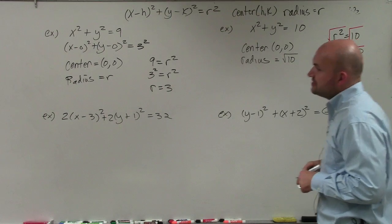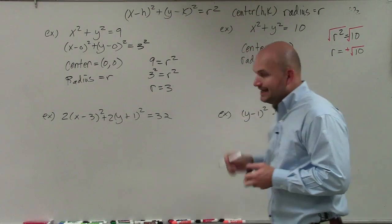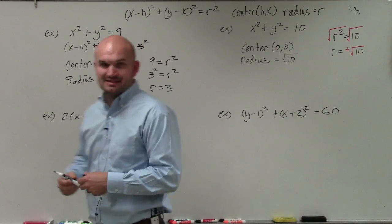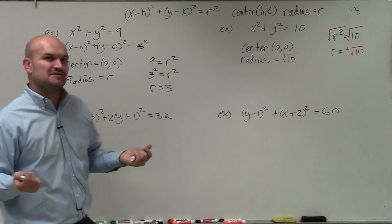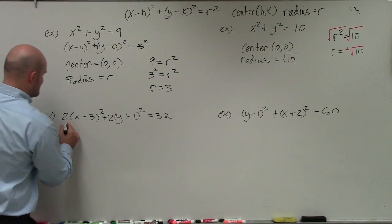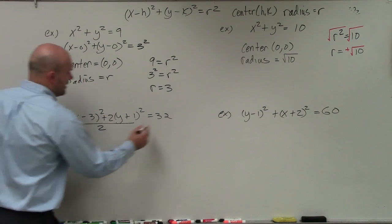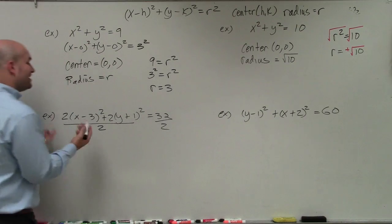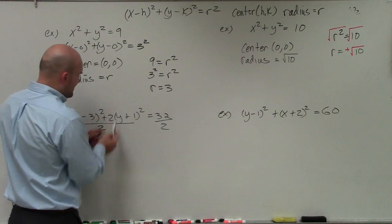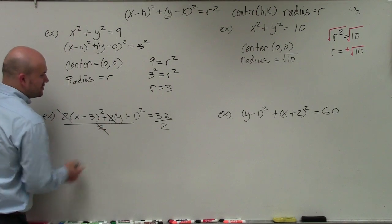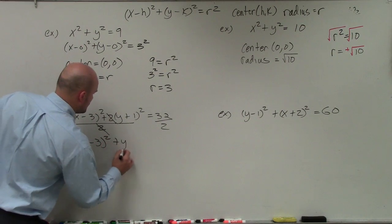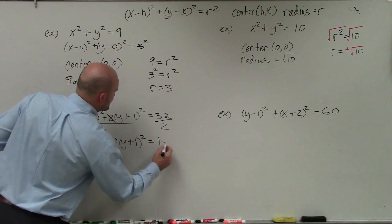In the next example, I have 2 times x minus 3 squared plus 2 times y plus 1 squared equals 32. You can see I have some numbers in front of my x and y's, where in the general equation I didn't have any of those numbers. What we need to do is get rid of these two numbers by dividing by 2 on both sides. The 2's all divide out, and I'm left with x minus 3 squared plus y plus 1 squared equals 16.